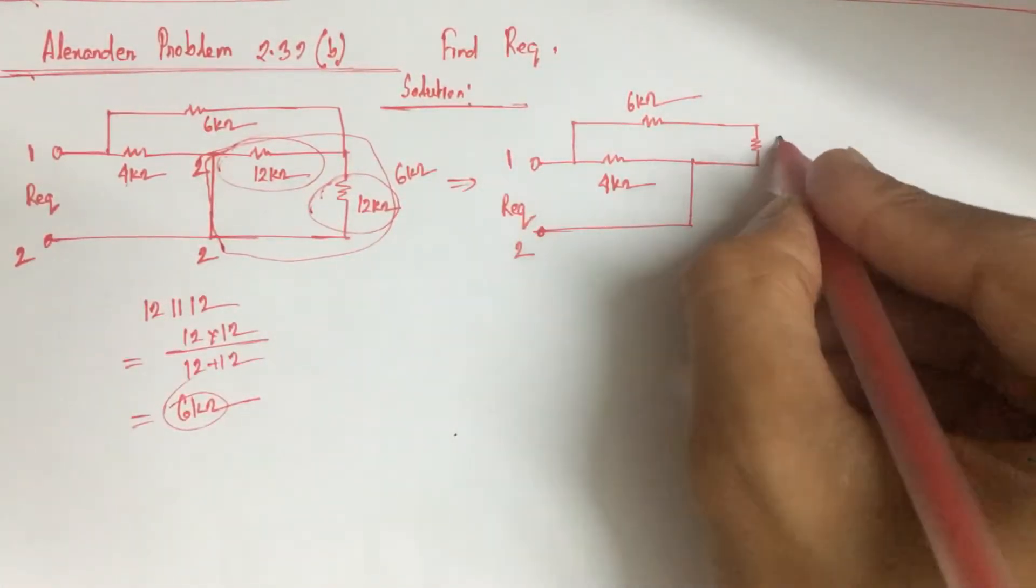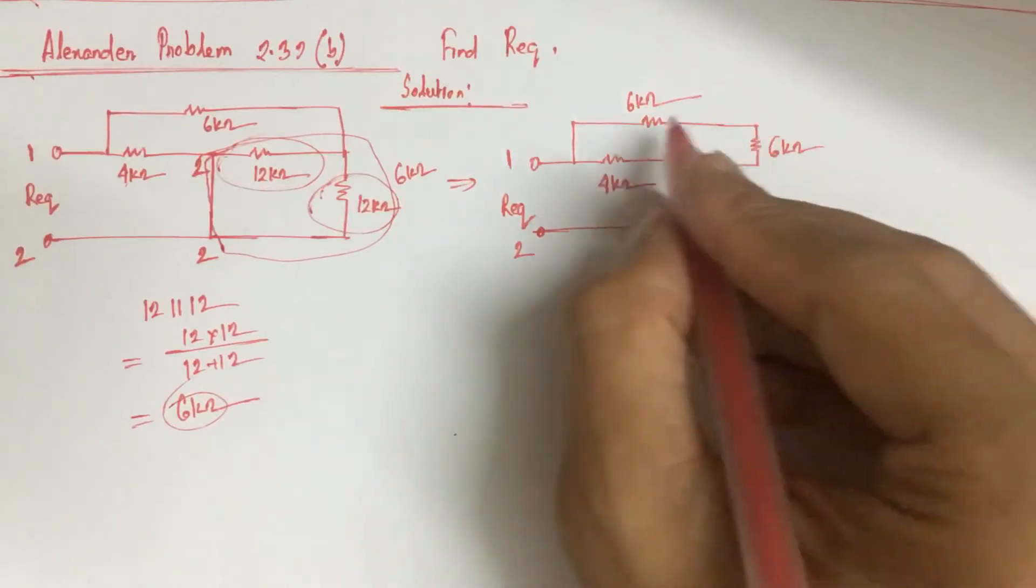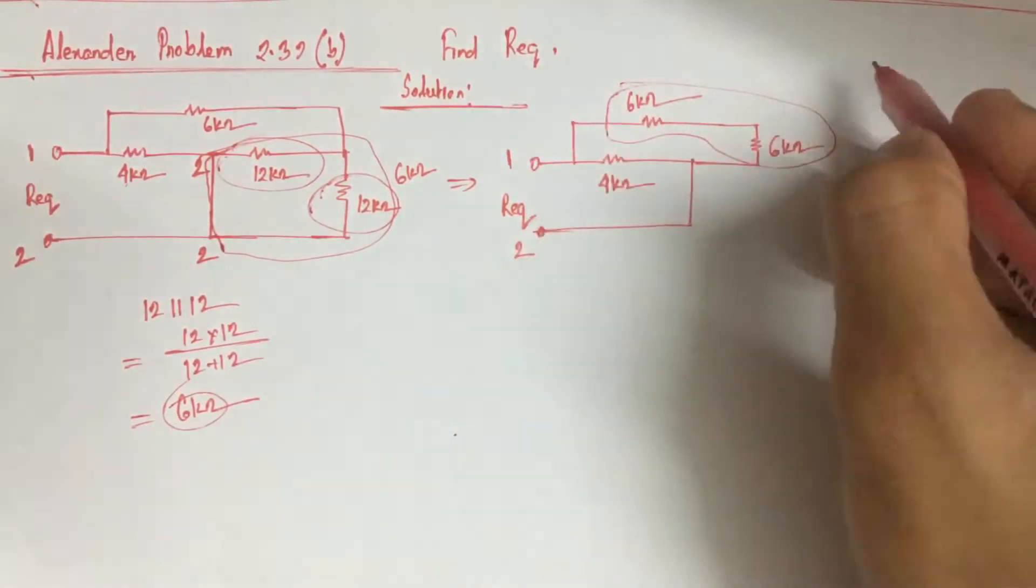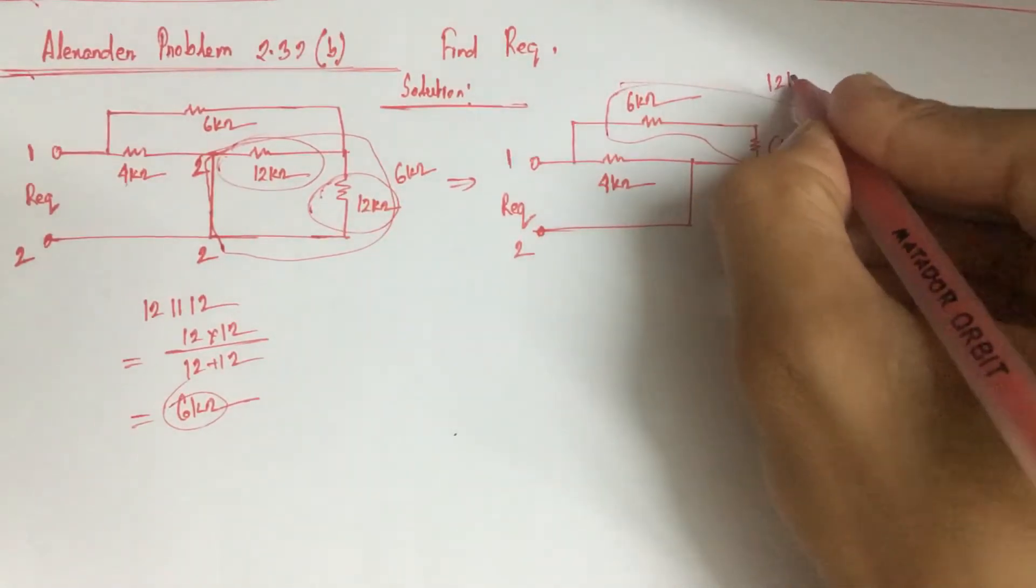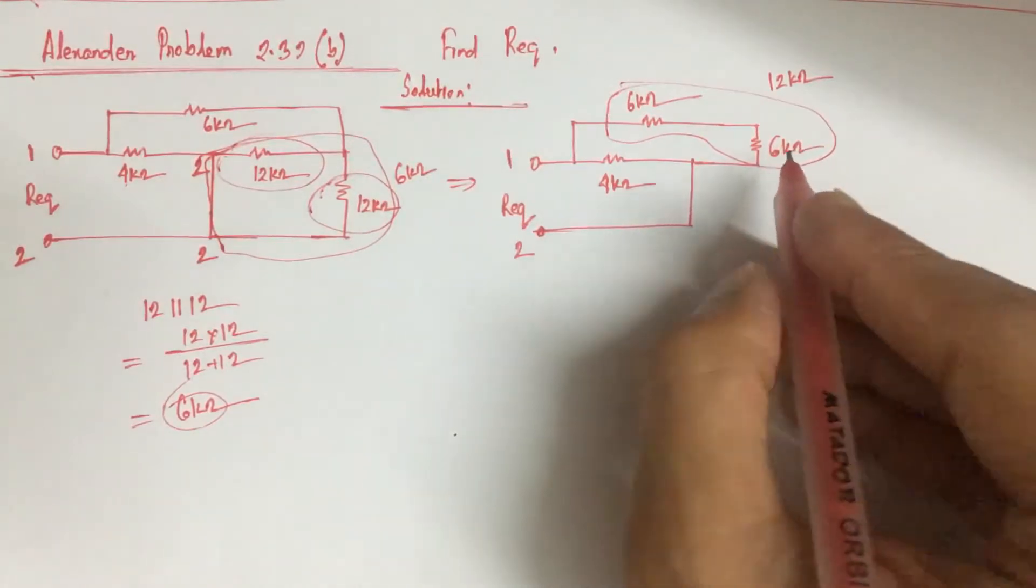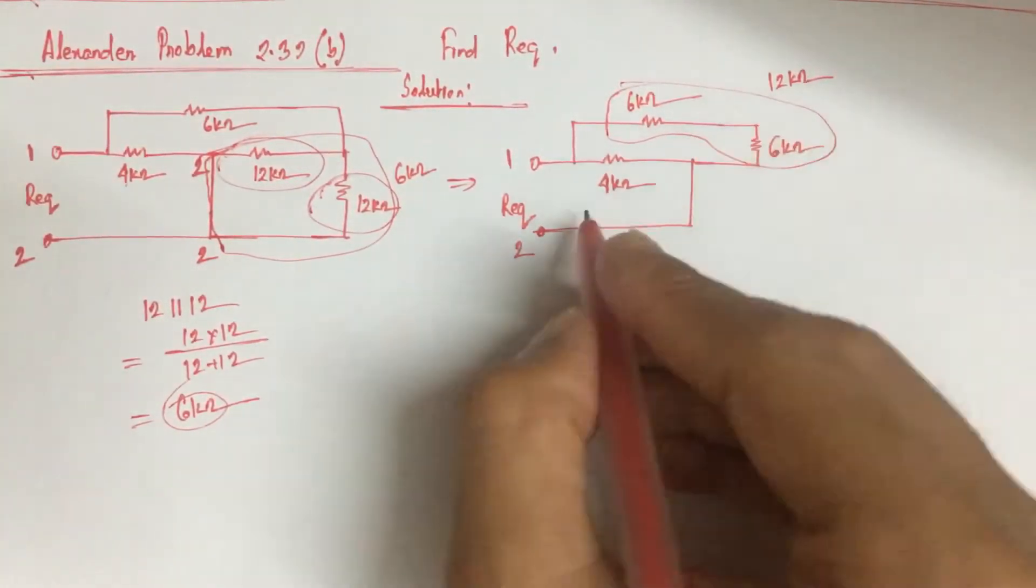And this is the equivalent 6 kohm. So here, 6 kohm and 6 kohm are in series, which can be replaced by 12 kohm resistance since it will be directly added due to series connection. Now this 12 kohm resistance is in parallel with 4 kohm resistance.